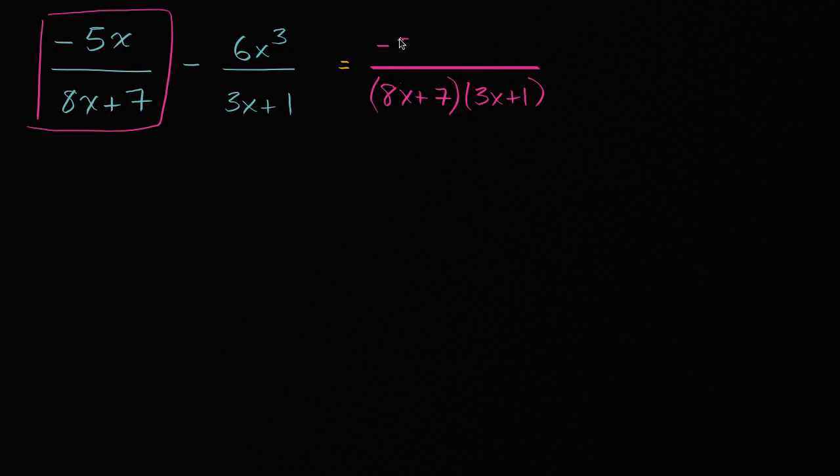I had negative 5x in the numerator, but if I'm going to multiply the denominator by 3x plus 1, and I don't want to change the value of the expression, we'll have to multiply the numerator by 3x plus 1 as well. Notice 3x plus 1 divided by 3x plus 1 is just 1, and you'd be left with what we started with. And from that, we are going to subtract all of this.